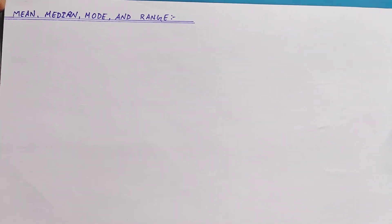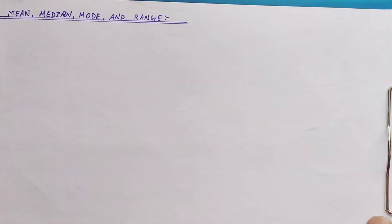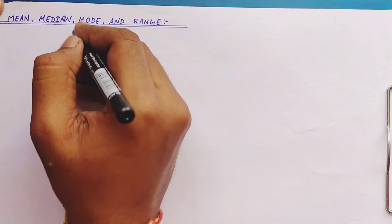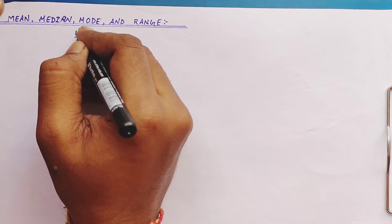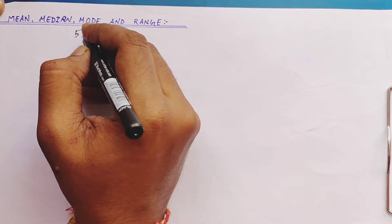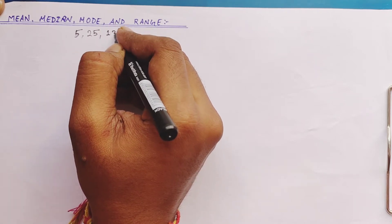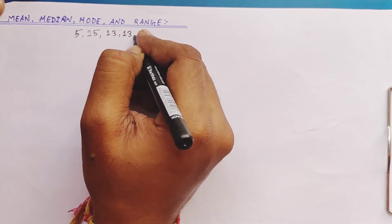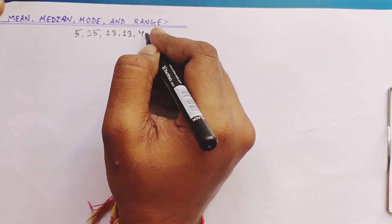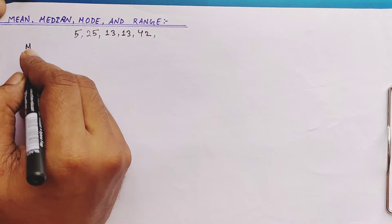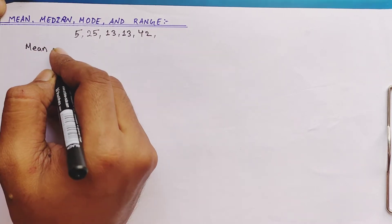Let us learn how to calculate the mean, median, mode, and range using a random example. The question is: the observations are 5, 5, 25, 13, 13, and 42.